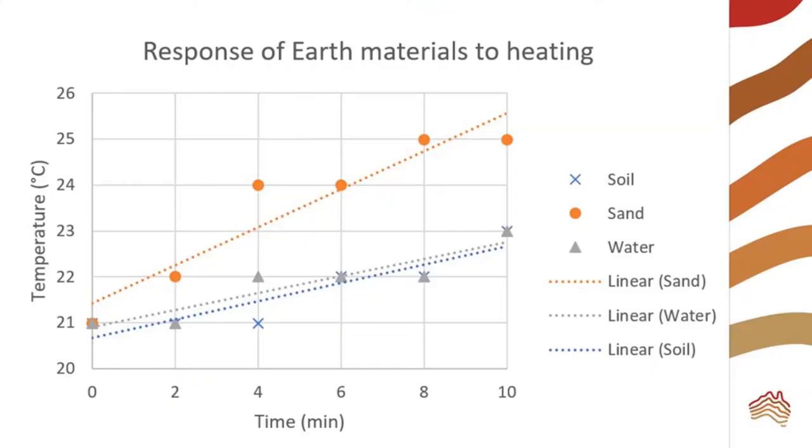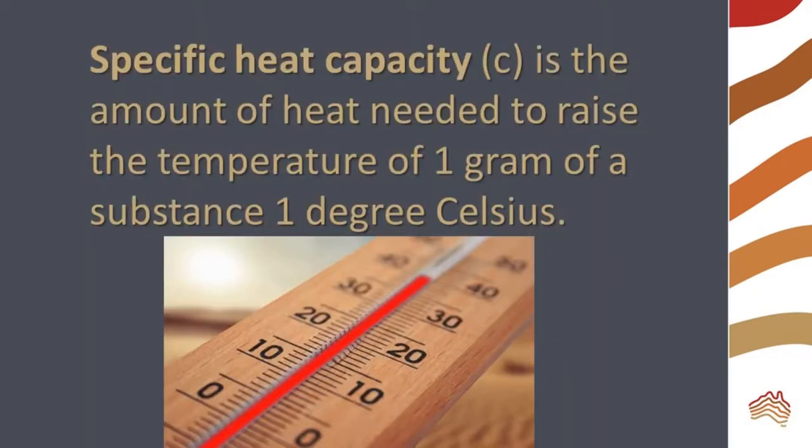You can see from the graph of my data that sand heated up much more quickly than water or soil. Sand represents Earth's rocky materials. We want to compare the specific heat capacity of these materials.